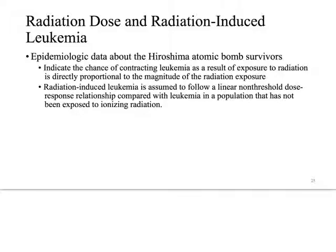The epidemiological data about Hiroshima survivors indicate that there is a chance of contracting leukemia as a result of radiation exposure that is directly proportional to the magnitude of that exposure. Radiation-induced leukemia is assumed to follow a linear non-threshold dose response compared to leukemia in a population not exposed to ionizing radiation. This was perhaps the first time scientists said: rather than worrying too much about absolute versus relative, we need to create policies for safety and regulation, so here is the curve you'll work from - this linear non-threshold curve.